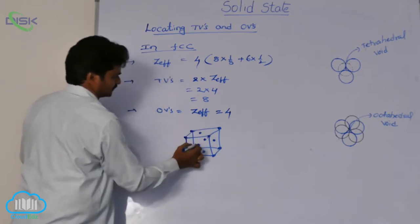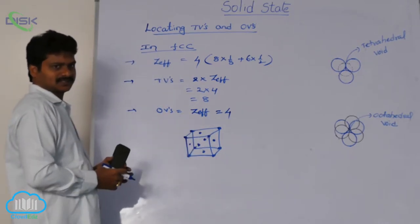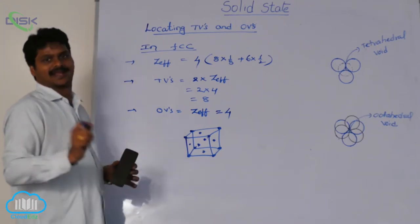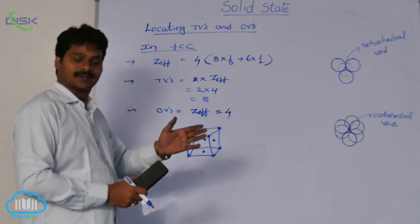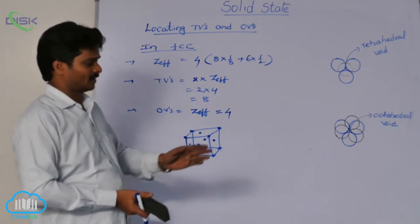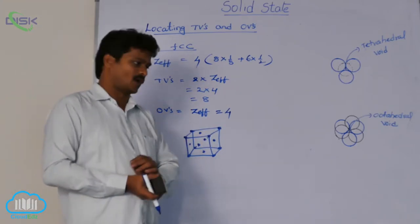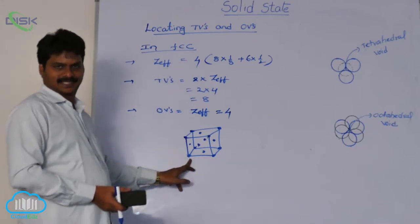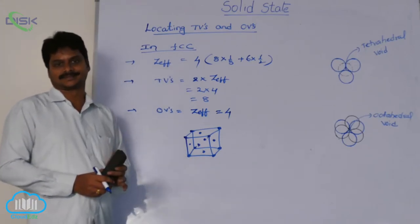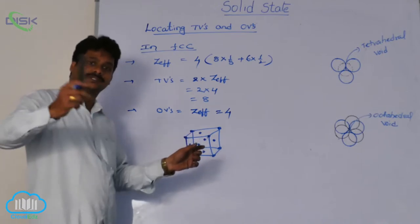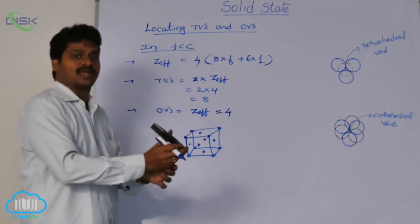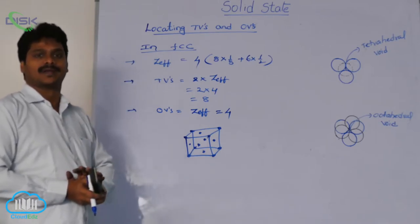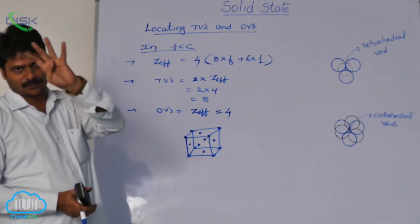In this FCC geometry, at each face center there is an atom, and on the back side also one atom at the center, and on the front side face also one atom. How many body diagonals are possible? We have 8 corners total. Each two opposite corners give one body diagonal, so 8 corner atoms give 4 body diagonals.